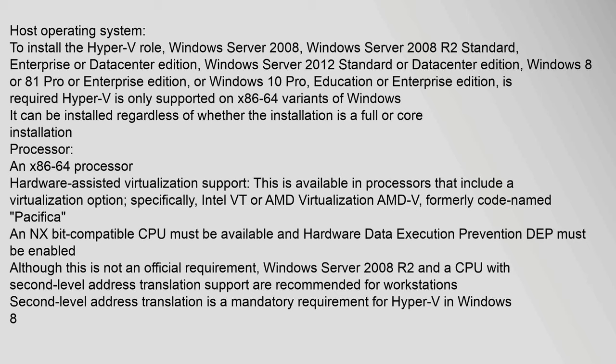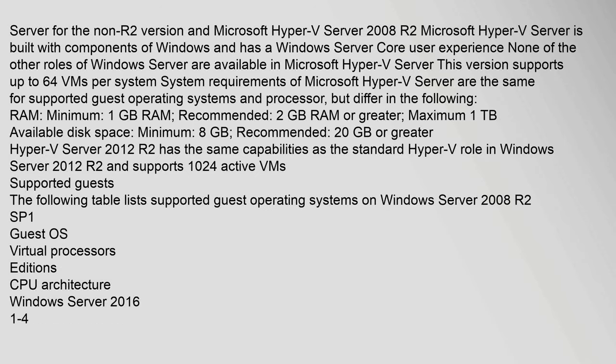Hardware-assisted virtualization support requires specifically Intel VT or AMD Virtualization (AMD-V), formerly codenamed Pacifica. An NX-bit compatible CPU must be available and hardware Data Execution Prevention (DEP) must be enabled. Although not an official requirement, Windows Server 2008 R2 and a CPU with second-level address translation support are recommended for workstations. Second-level address translation is a mandatory requirement for Hyper-V in Windows 8. Minimum memory is 2 GB for the non-R2 version. Microsoft Hyper-V Server is built with components of Windows and has a Windows Server Core user experience; none of the other roles of Windows Server are available, and this version supports up to 64 processors.